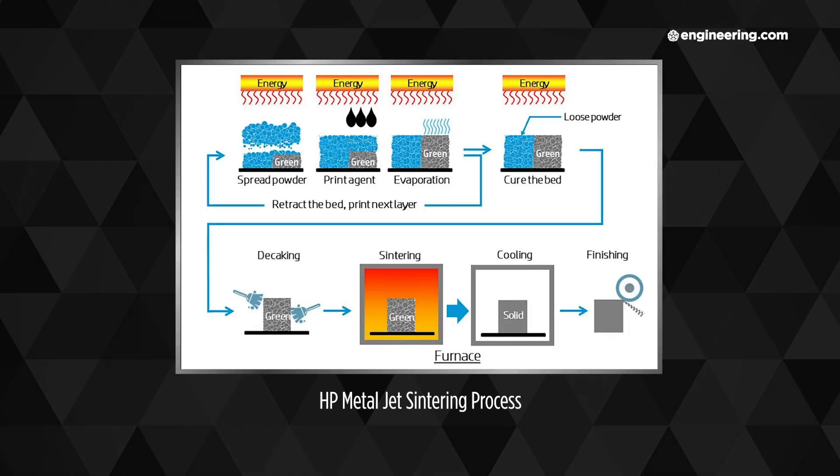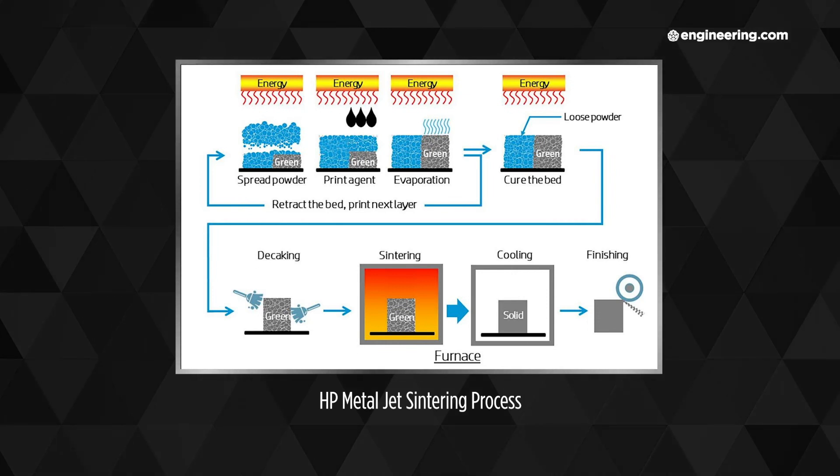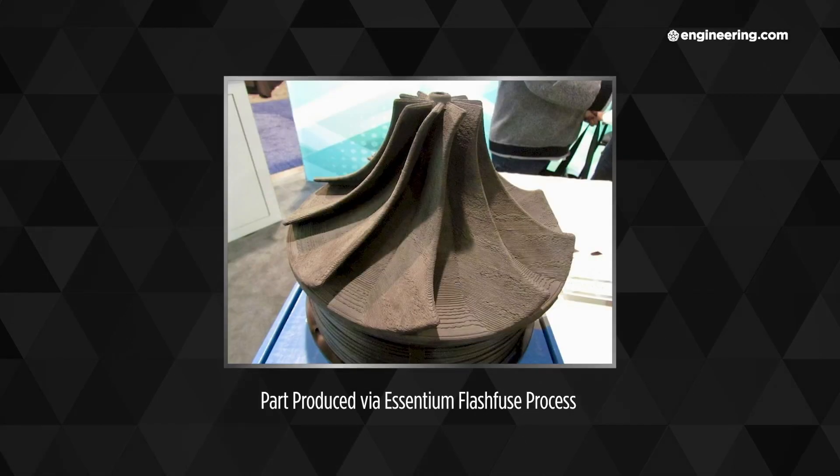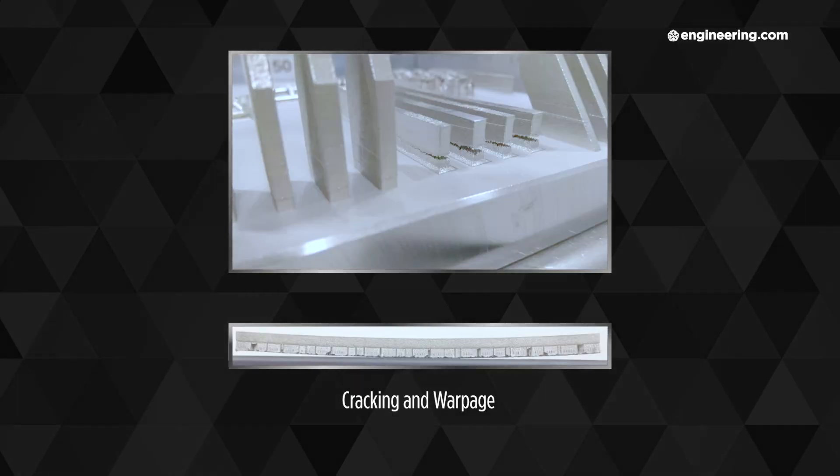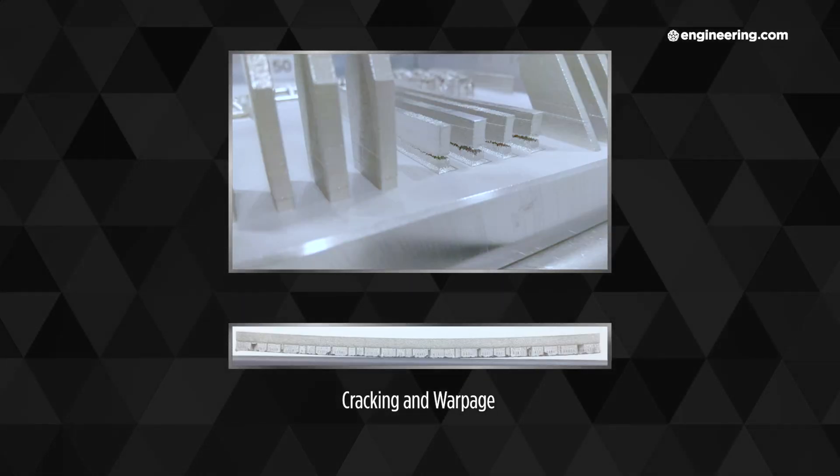Companies such as Desktop Metal, Mark Forged, HP and Ascentium employ processes which produce a green part which must be sintered in an oven very much like a powder metallurgy part and like any powder metallurgy part they may shrink anisotropically. Metal parts produced by nearly any additive process have occasionally been known to warp or bend as internal stresses are relieved during machining or heat treatment, a cost and time factor for anyone trying to produce accurate precise parts.